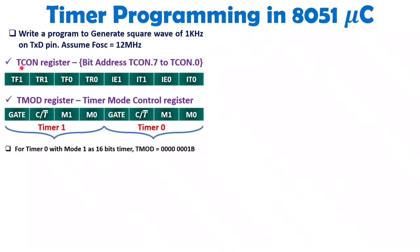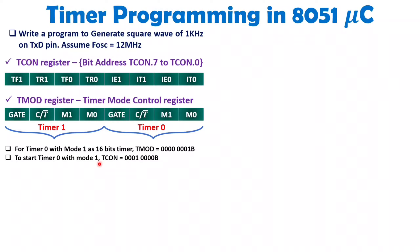We need to understand how to start and stop the count, so we look at the TCON register. For Timer 0, we need to look at the TR0 bit. When you make this bit 1, you start Timer 0; when you make it 0, you stop Timer 0. So TCON should be 00010000 — with TR0 = 1 to start the timer. To stop the timer, configure TCON with all zeros.